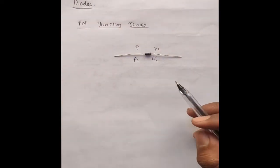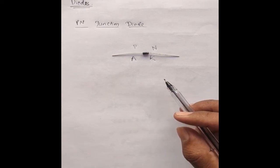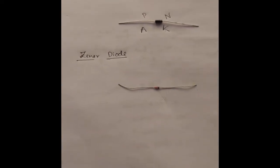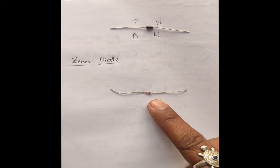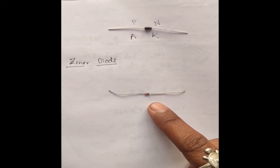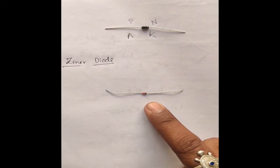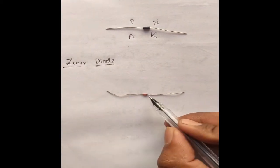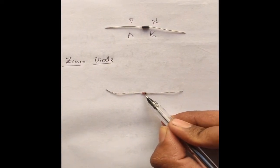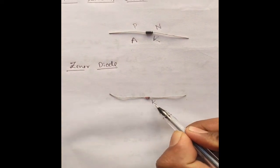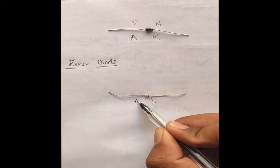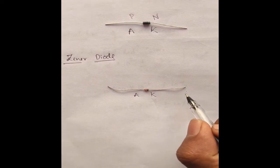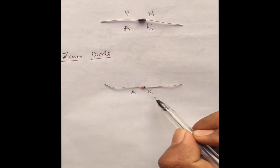P-N junction diodes are used in the applications of rectifiers and switching circuits. The Zener diode resembles the P-N diode but it also conducts in reverse bias. It has two terminals — the black color coating on one terminal indicates the cathode, and the other side is the anode. The Zener diode is used in voltage regulators in reverse biasing mode.